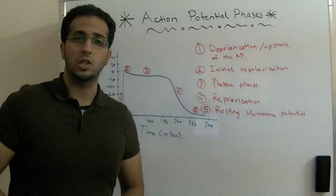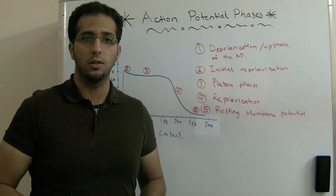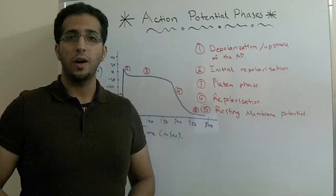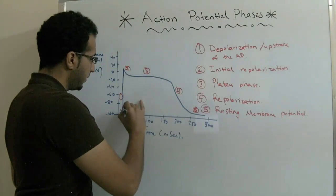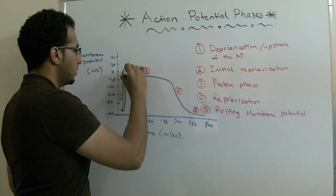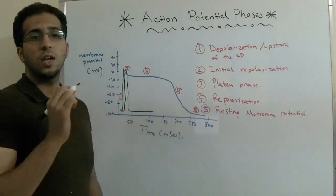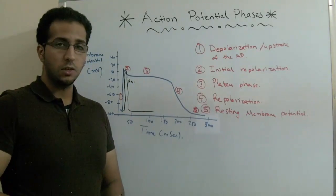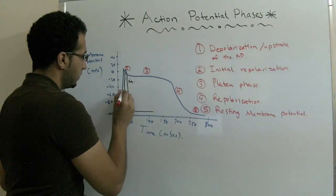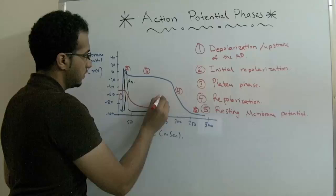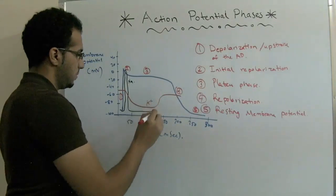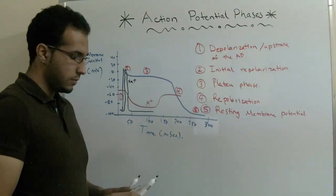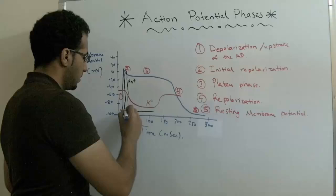Now we're going to discuss the ionic conductance during the action potential. During the depolarization phase, sodium is entering the cell in very high quantities. Potassium also enters the cell, and calcium is found inside the cell during this phase.